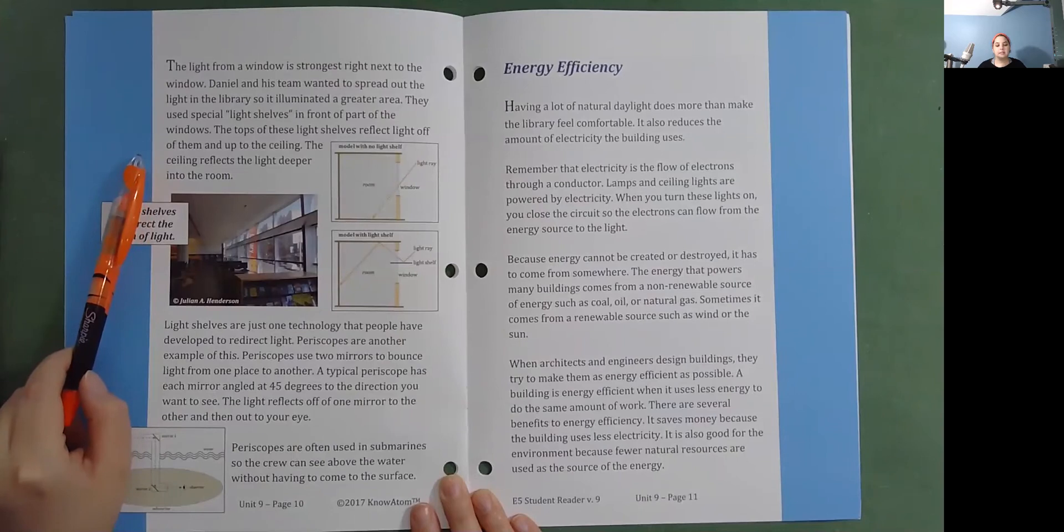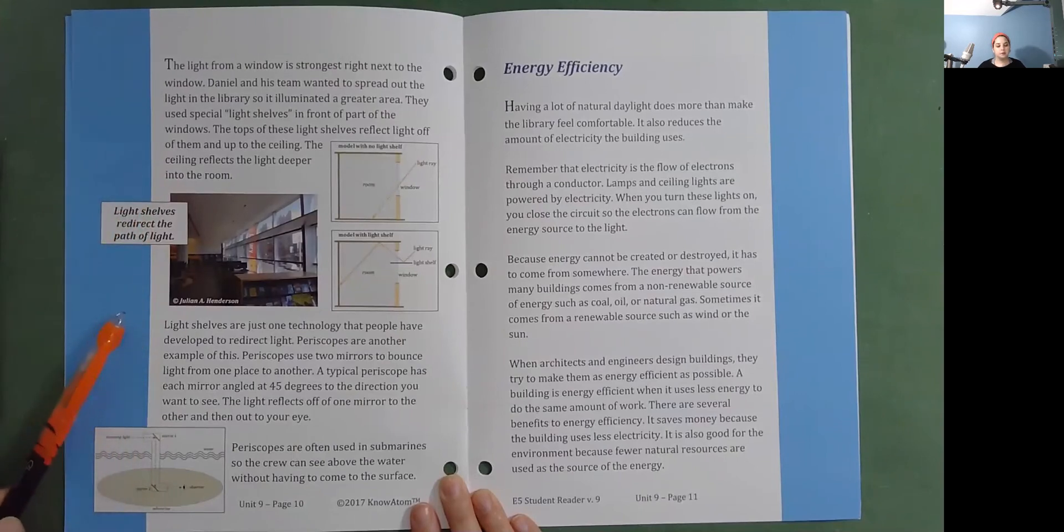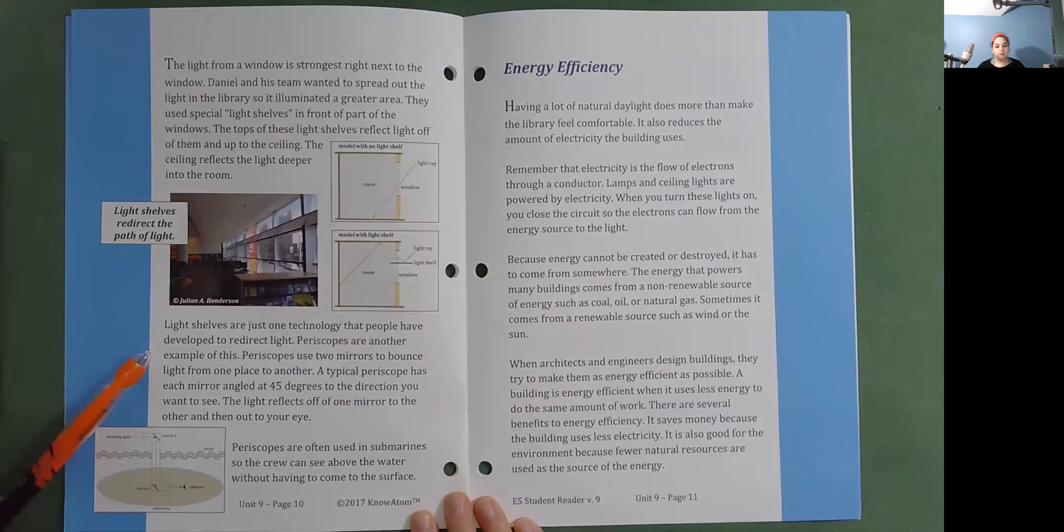The ceiling reflects the light deeper into the room. Light shelves are just one technology that people have developed to redirect light. Periscopes are another example of this. Periscopes use two mirrors to bounce light from one place to another.